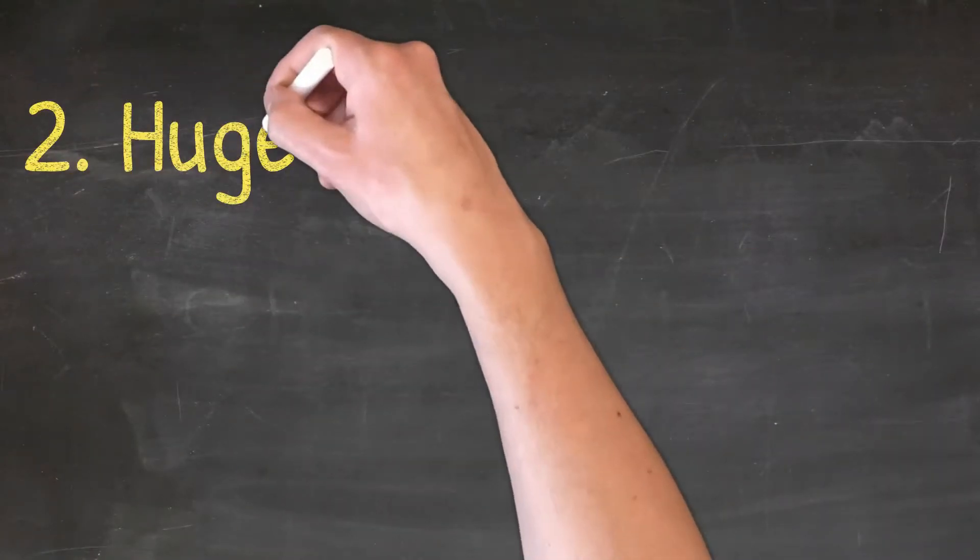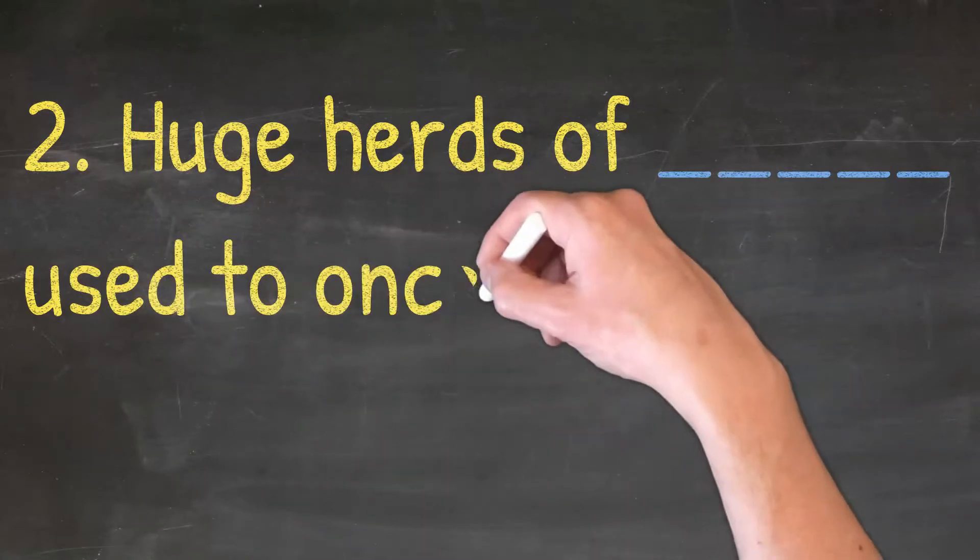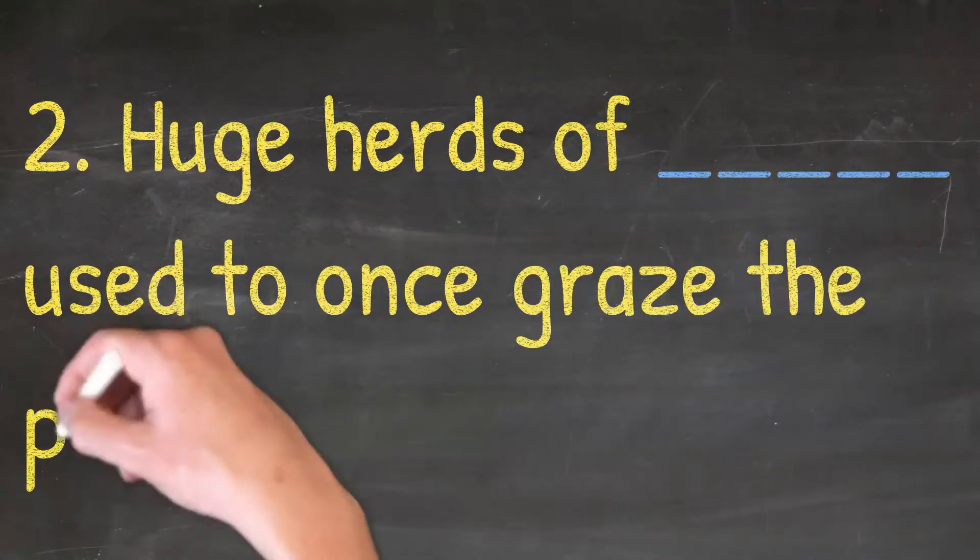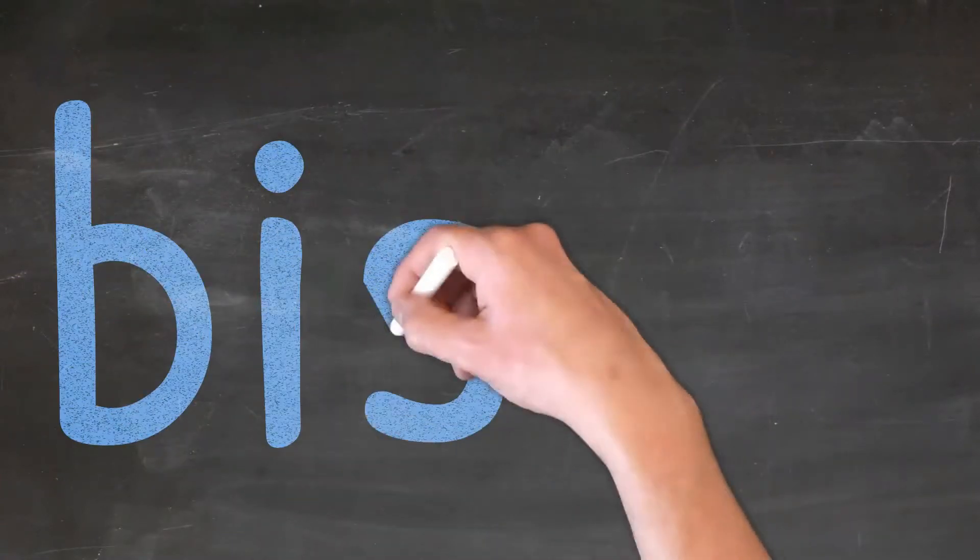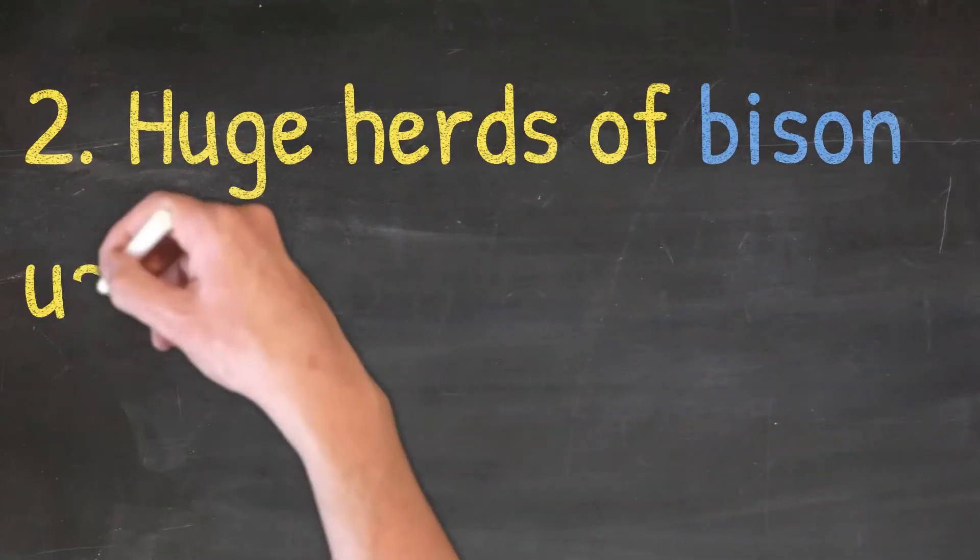Huge herds of dash used to once graze the prairies. Bison. Huge herds of bison used to once graze the prairies.